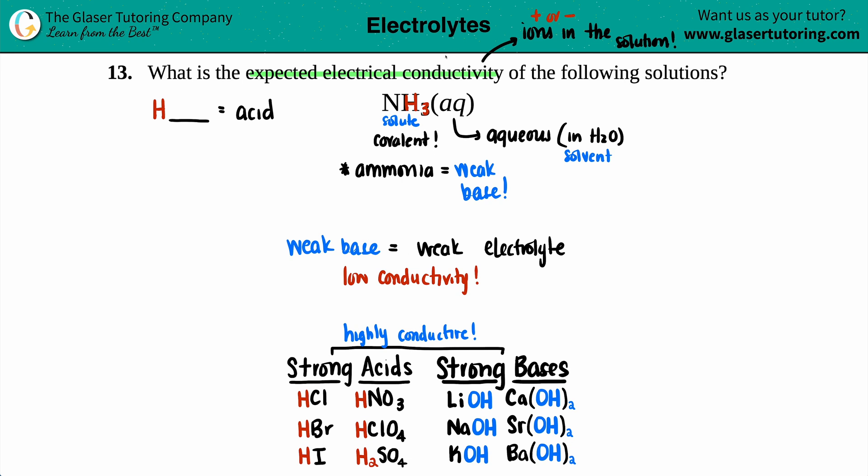So the light bulb, if you have something attached to this solution, the light bulb would go on, but it won't go on as bright as if you had one of these six strong acids or six strong bases. And that is it. So low conductivity, you got some ions there, but not as many as a strong acid or base. And that's the end.